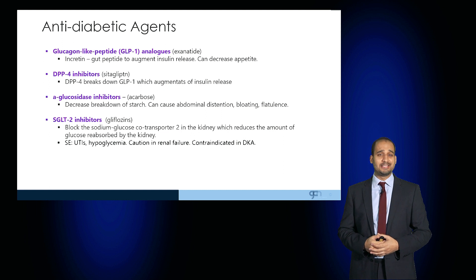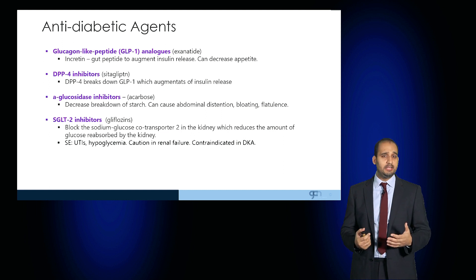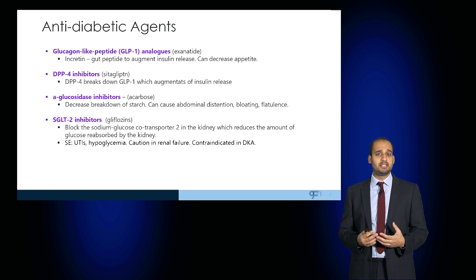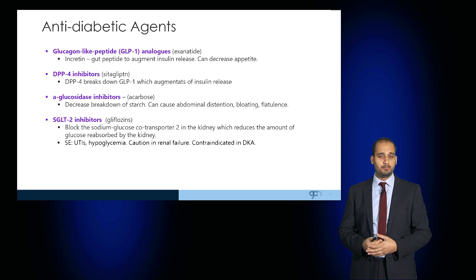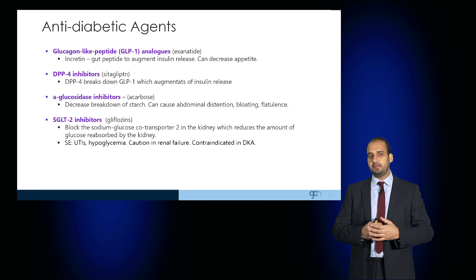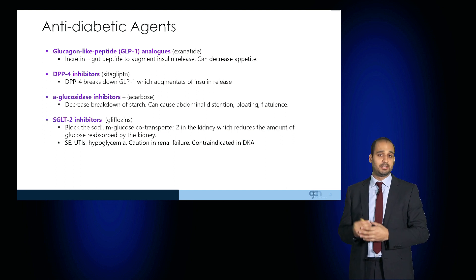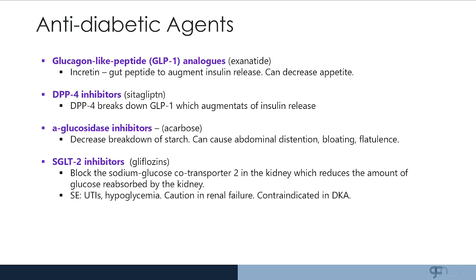GLP-1 analogues such as exenatide are incretins — gut peptides which increase insulin release but can affect the patient's appetite. DPP-4 inhibitors such as sitagliptin break down GLP-1 to augment insulin release. Alpha-glucosidase inhibitors such as acarbose prevent the breakdown of carbohydrates such as starch, but can cause abdominal distension, bloating and flatulence.